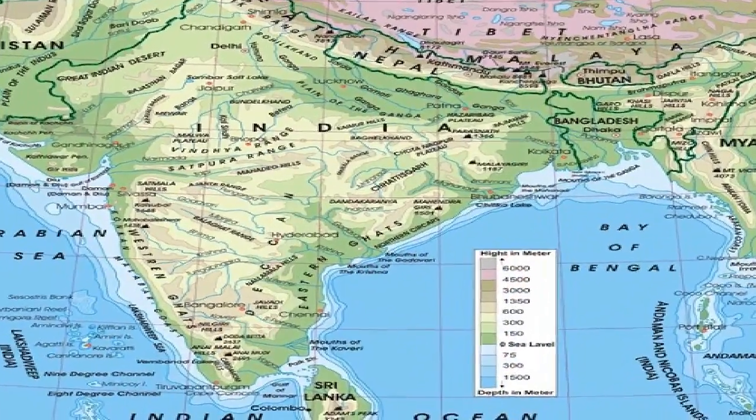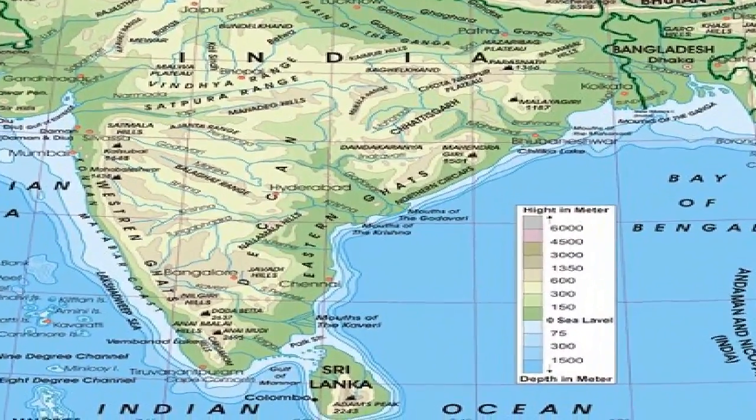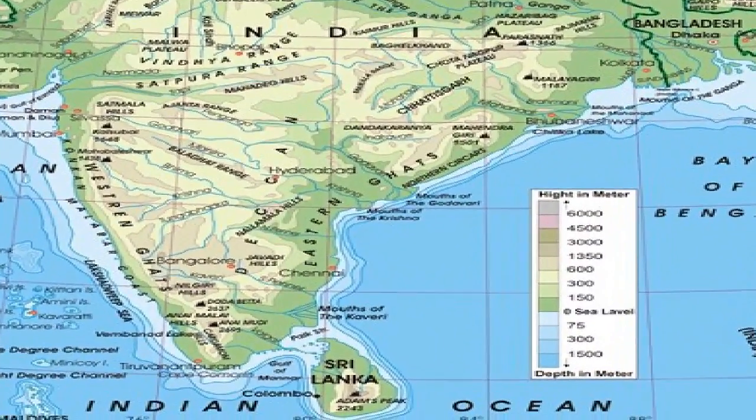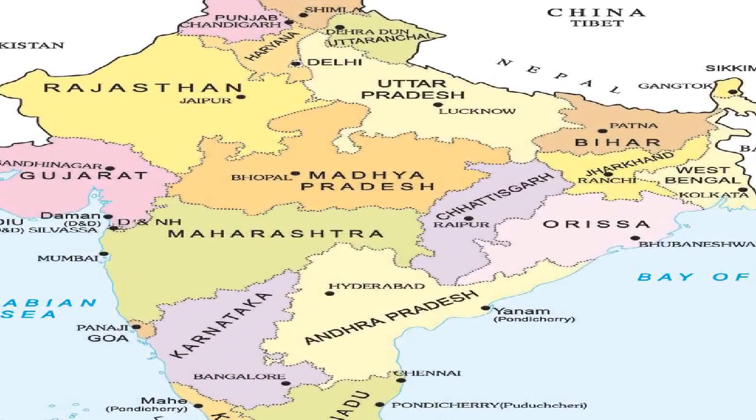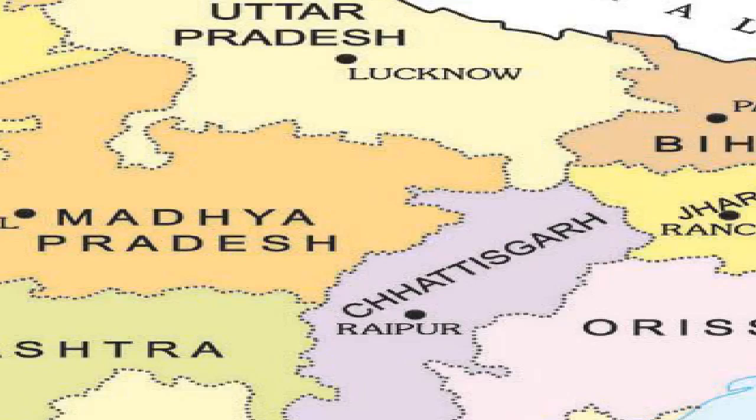Physical maps show physical features of a place, such as landforms and water bodies. Political maps show different states, countries or cities.